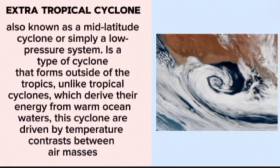Extra-tropical cyclone, also known as a mid-latitude cyclone or simply a low pressure system, is a type of cyclone that forms outside of the tropics. Unlike tropical cyclones, which derive their energy from warm ocean waters, these cyclones are driven by temperature contrast between air masses.